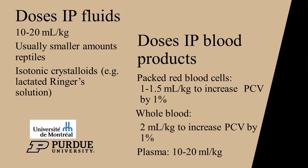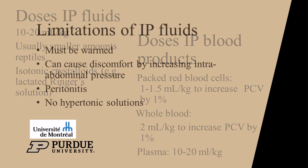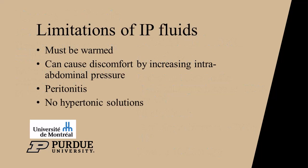Intraperitoneal red blood cells take up to 72 hours to be absorbed and shouldn't be used for active hemorrhage. IP fluids should be warm to avoid dropping the body temperature and must be given aseptically to avoid peritonitis.